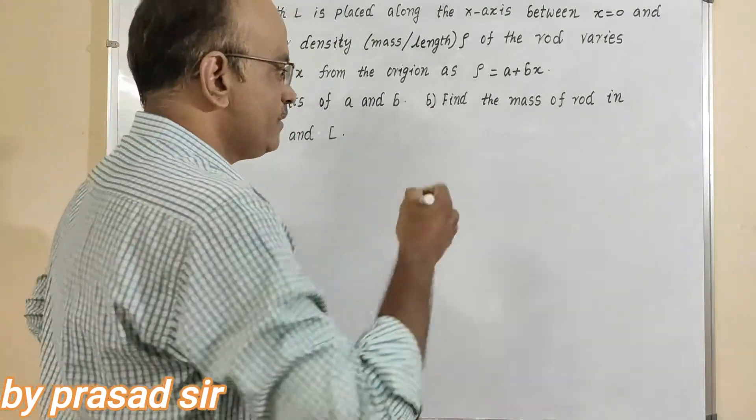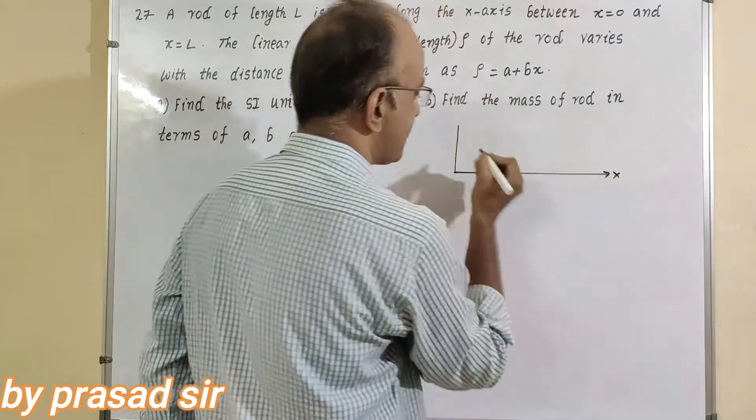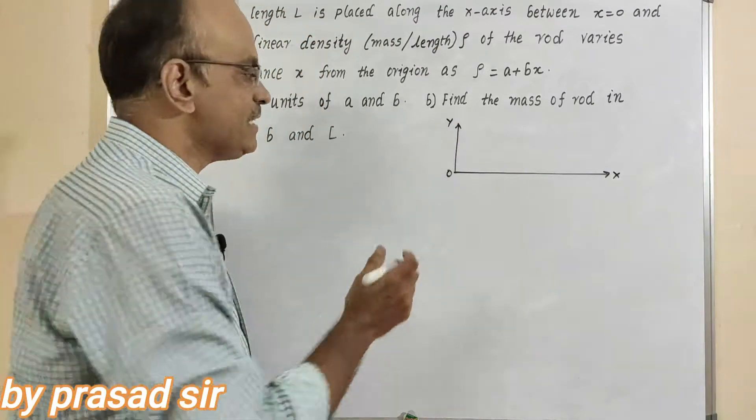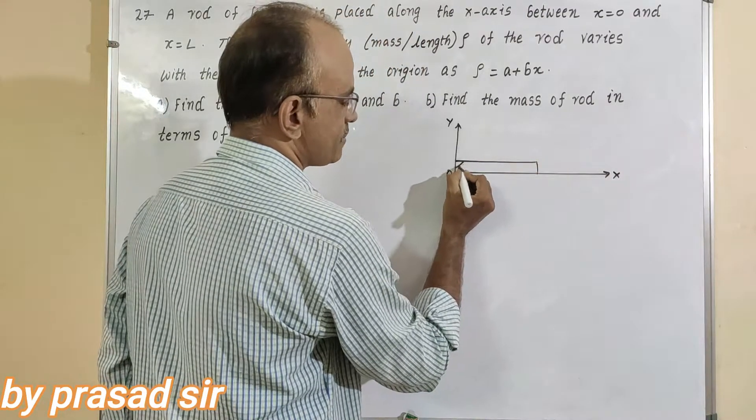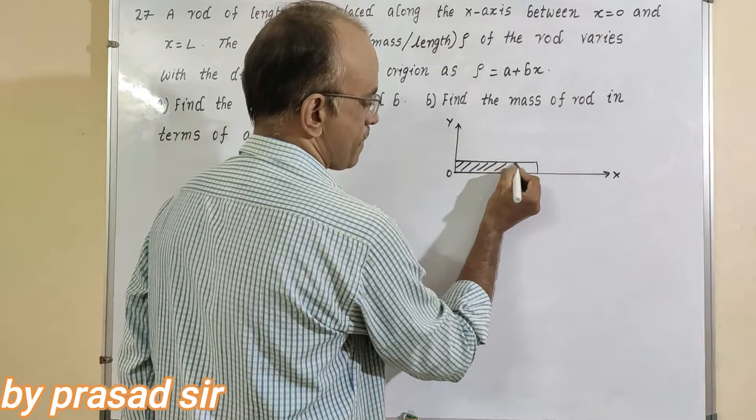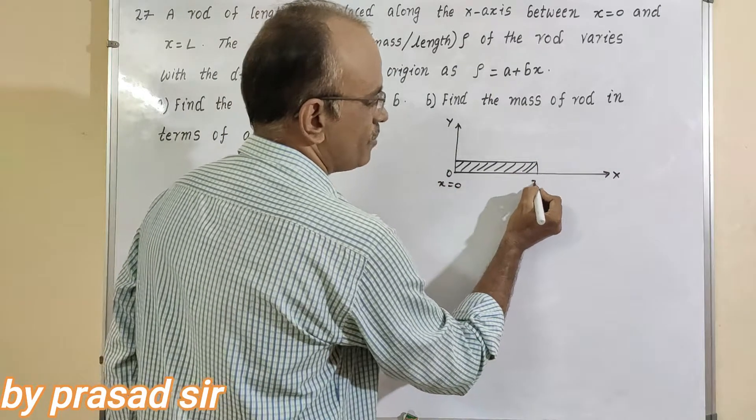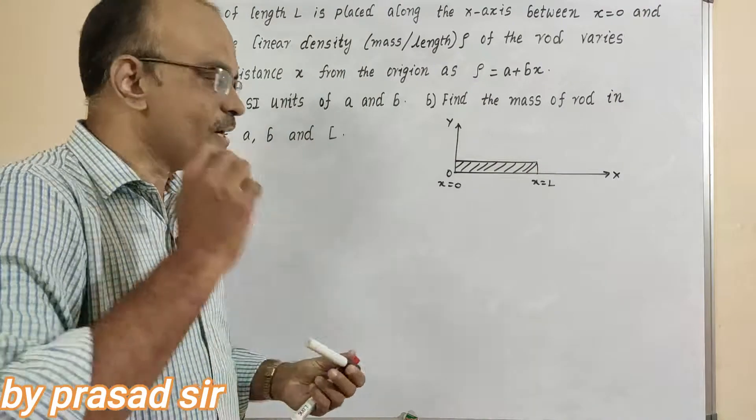Now first of all, I am taking like this. This is the x-axis. This is the y-axis. It is the origin. We are placing the rod on the x-axis from x equals 0 and x equals L. So now, listen properly.